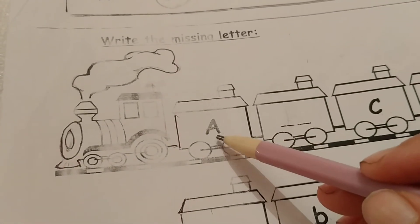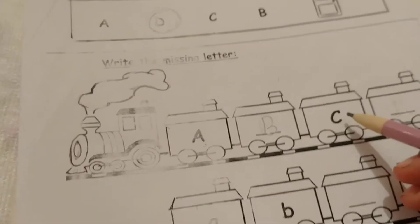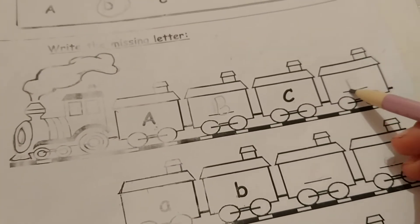Write the missing letter. Capital A. What comes next? Capital B. Capital C. Next, capital D.